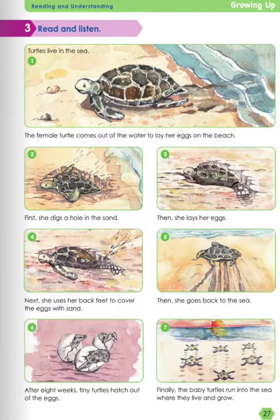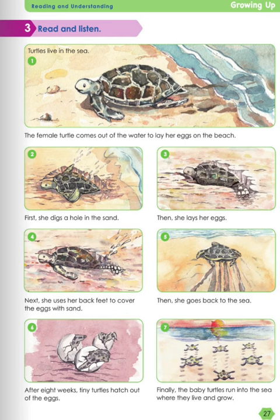Next is read and listen. Remember, Maha told Nina that she had written some information about turtles. Let's read together. 1. Turtles live in the sea. The female turtle comes out of the water to lay her eggs on the beach. 2. First, she digs a hole in the sand. 3. Then she lays her eggs. 4. Next, she uses her back feet to cover the eggs with sand. 5. Then she goes back to the sea. 6. After 8 weeks, tiny turtles hatch out of the eggs. Finally, the baby turtles run into the sea where they live and grow.